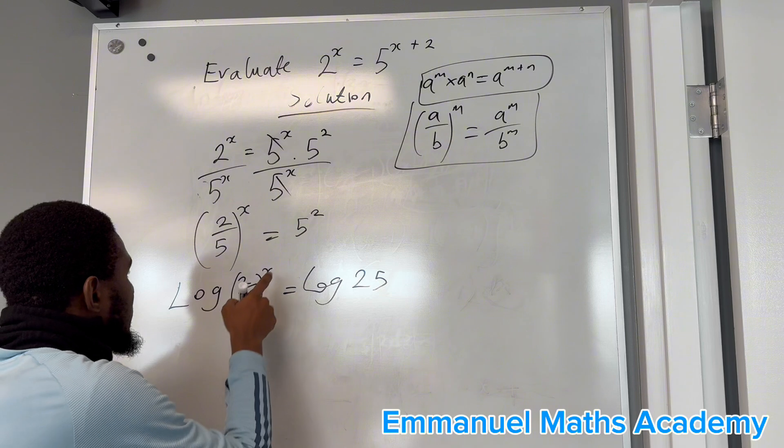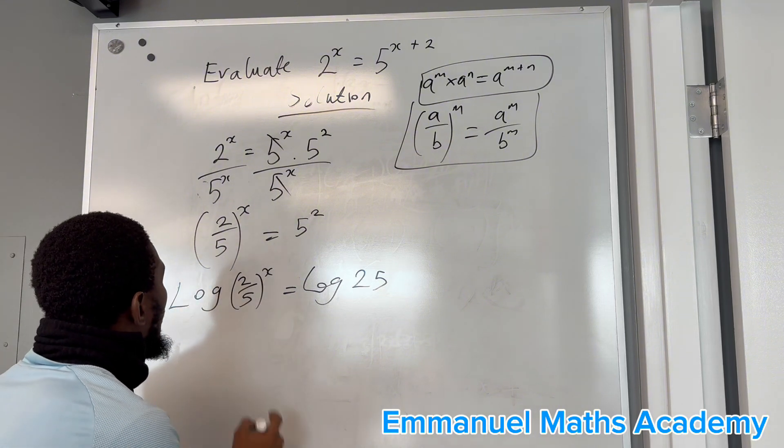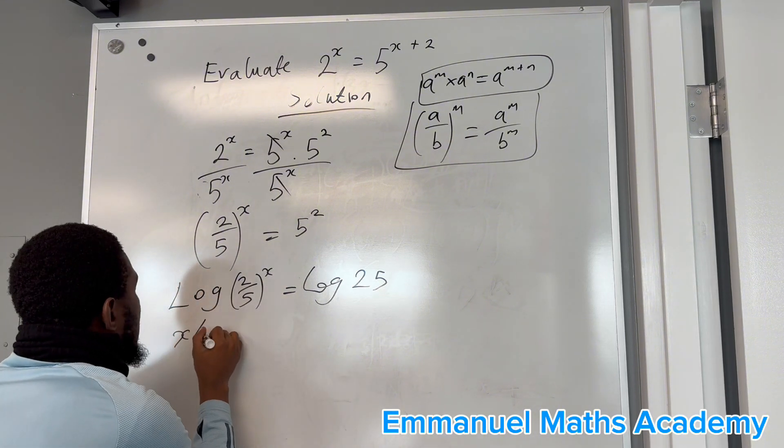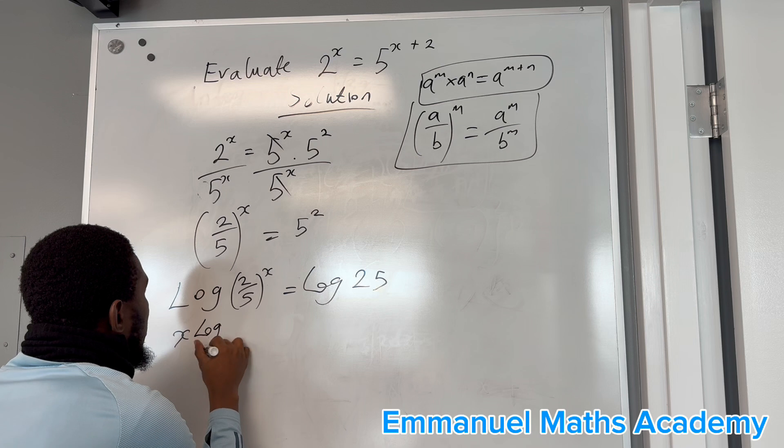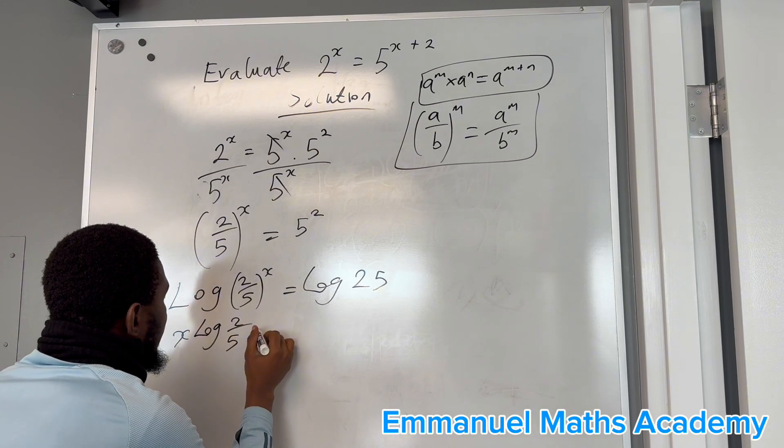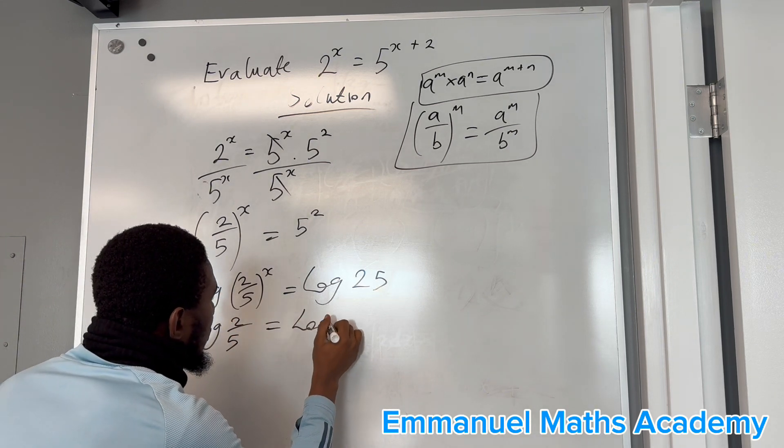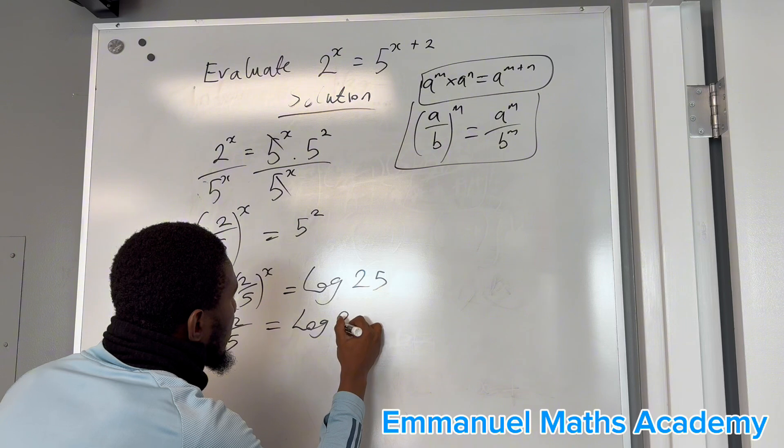Then the exponent comes down, so you have x times log of 2 over 5 equals log 25.